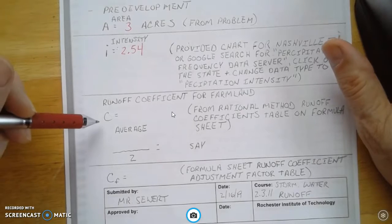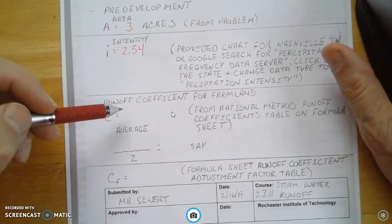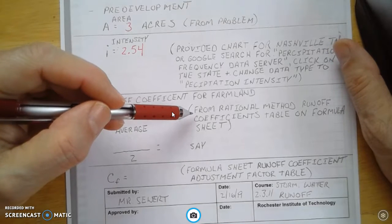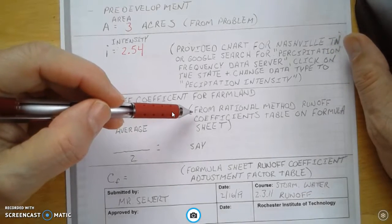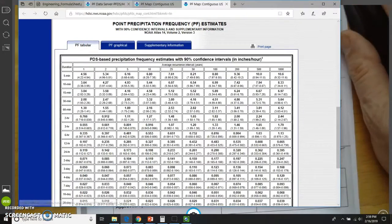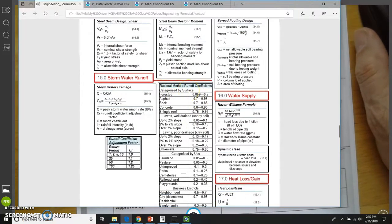Next thing, we've got to calculate for C. C is the runoff coefficient, and that is for farmland. So we're going to take a look at our formula sheet again. This is going to come from a column on the formula sheet. It's going to come from this column right here called the rational method for runoff coefficients. I go down the left-hand side until I find farmland. It says categorized by use, and it's 0.05 to 0.3.